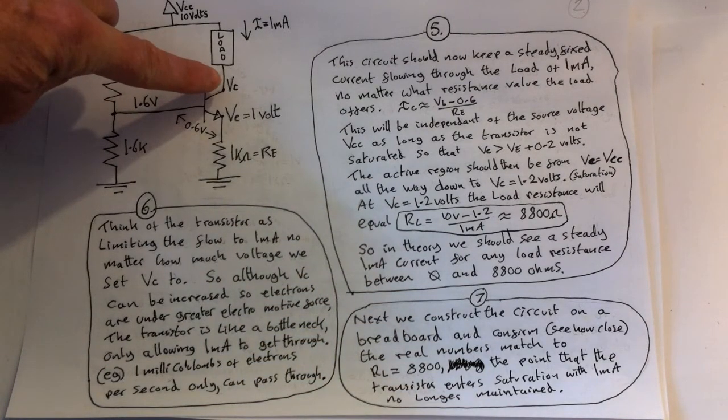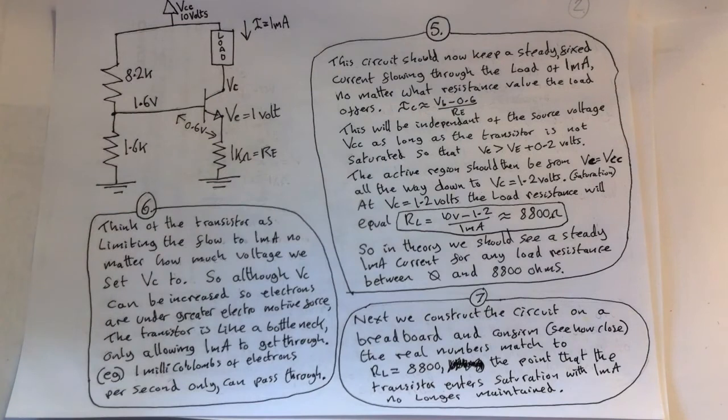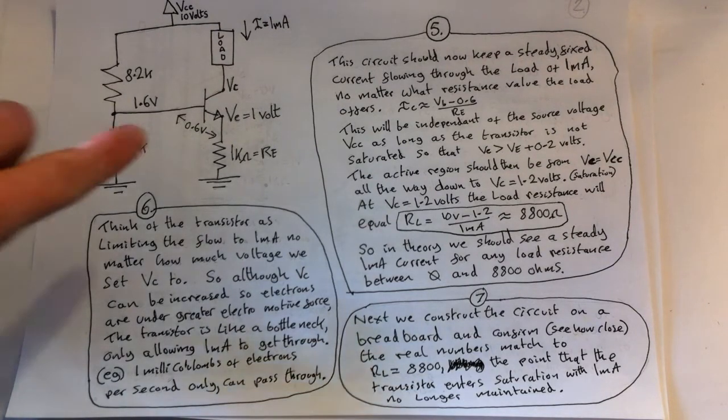No matter how much voltage we set, no matter what the collector voltage is, the transistor will only allow 1 milliamp to flow. So although we can increase the collector voltage so electrons are under greater electromotive force, the transistor acts like a bottleneck and it's only going to allow 1 milliamp to get through. In other words, 1 millicoulomb of electrons per second only can pass through.